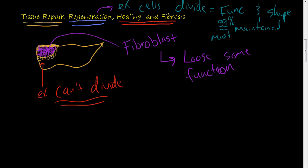So in regeneration, these cells divide and most of the time the function and the shape is maintained. In the case of healing and fibrosis, these fibroblasts come in and they start laying down this matrix — the scar tissue. You lose some function when this happens because you don't have the normal cells working together, the architecture is altered, and we're going to talk about in later videos how strong these scars are and different things.